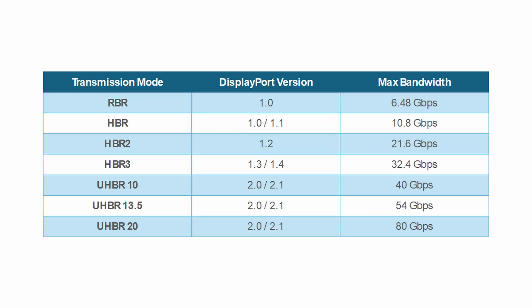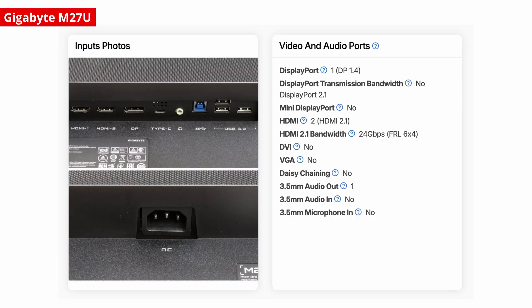But let's say all of your devices do support the latest version of either interface. Even then, you might not be getting the maximum bandwidth possible. DisplayPort, for example, now offers seven different transmission modes, which determine the max bandwidth you'll get. So you might be capped at 40 gigabits per second with UHBR 10, rather than the max of 80 gigabits per second with UHBR 20. Likewise, some monitors with HDMI 2.1 ports have lower max bandwidth than the full 48 gigabits per second supported by HDMI 2.1. The Gigabyte M27U, for example, caps out at 24 gigabits per second, which means it has to rely on DSC to hit the highest refresh rates.